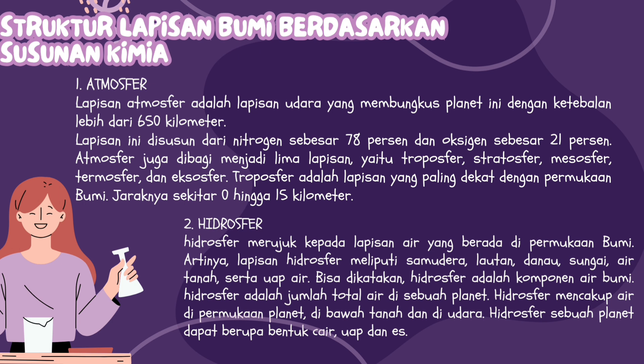Yang kedua adalah hidrosfer. Hidrosfer merujuk kepada lapisan air yang berada di permukaan bumi, meliputi samudera, lautan, danau, sungai, air tanah, serta uap air. Hidrosfer adalah komponen air bumi dan merupakan jumlah total air di sebuah planet. Hidrosfer mencakup air di permukaan planet, di bawah tanah, dan di udara. Hidrosfer sebuah planet dapat berubah bentuk menjadi cair, uap, dan es.